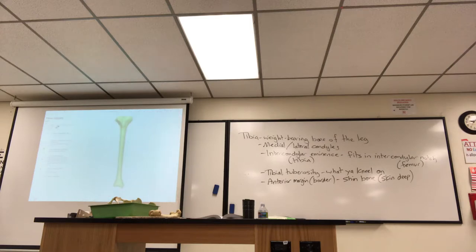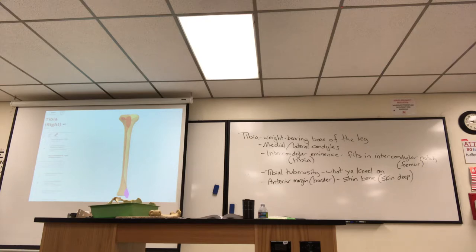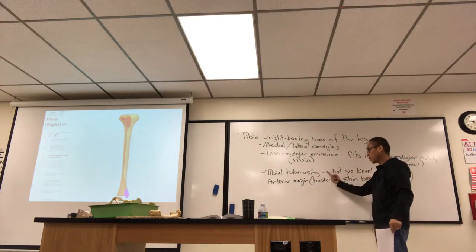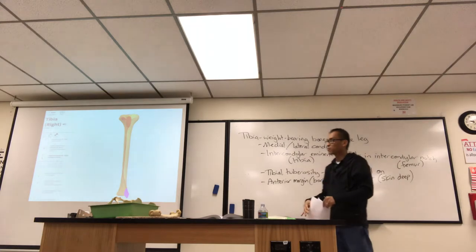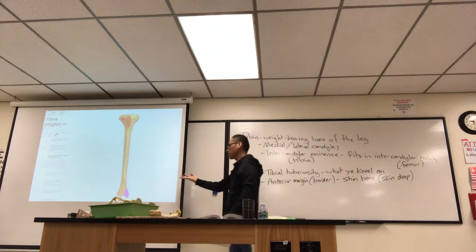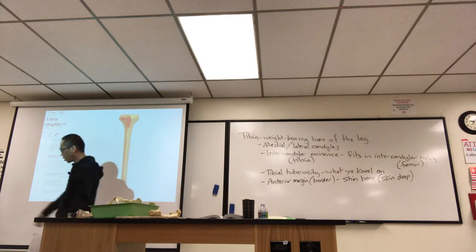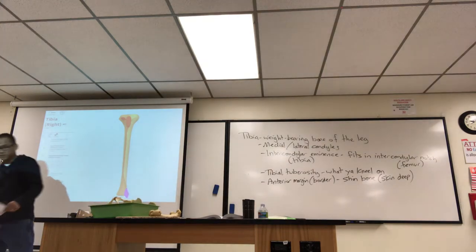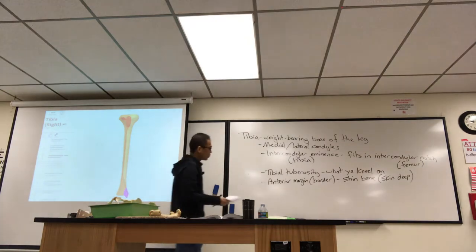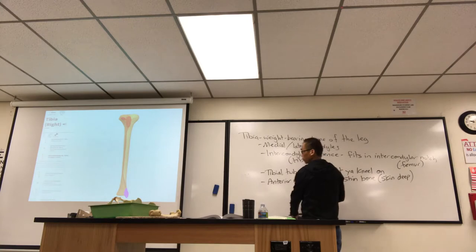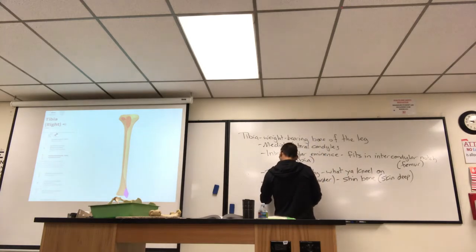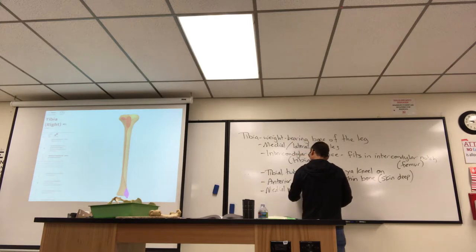The medial malleolus is in purple now. That's your number one clue to orient you — front from back, medial from lateral. For the front, look for the tibial tuberosity. If you know that's the front and the medial malleolus is medial, you can tell front from back and left from right. The medial malleolus is your inside ankle bump — you can palpate it.